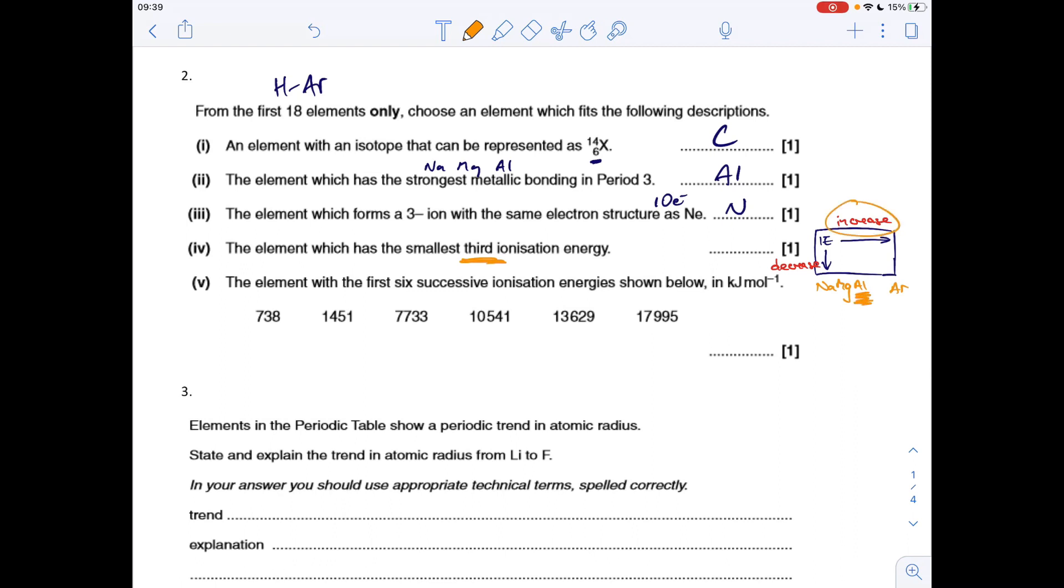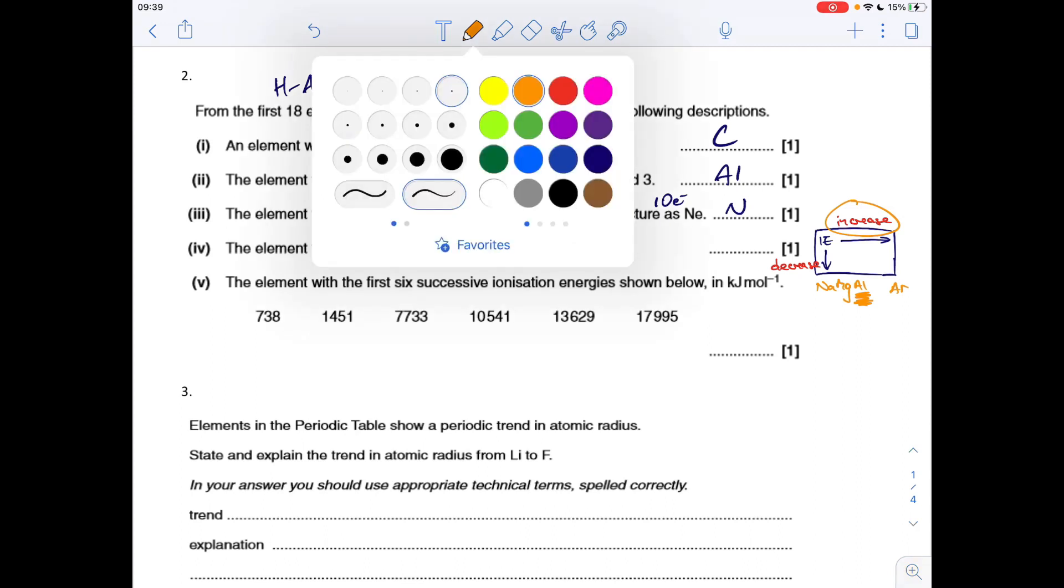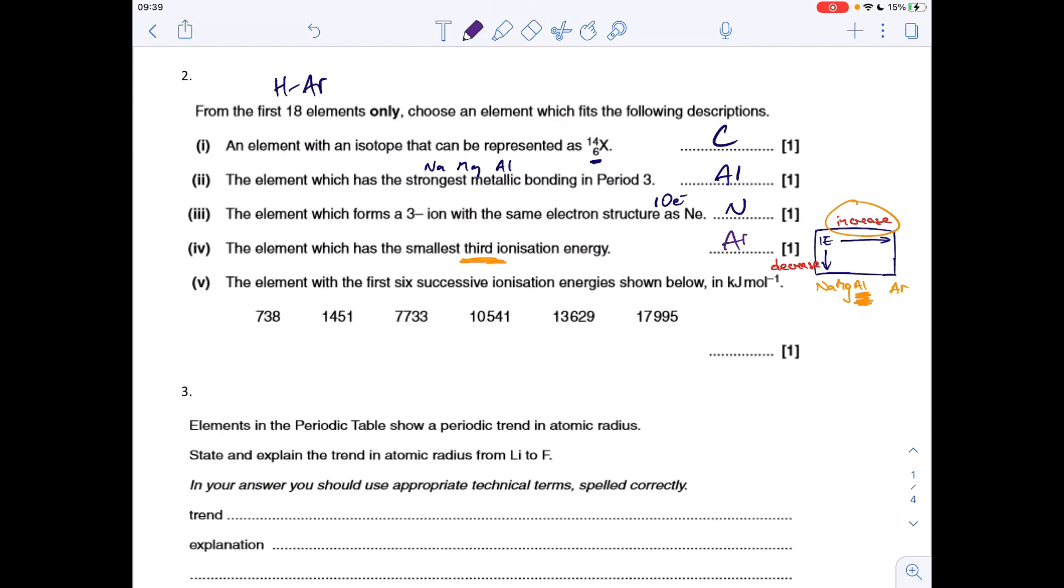So that there is going to have the lowest third ionisation energy. So at the end of all that, the answer was Al.